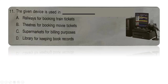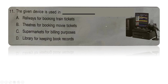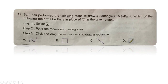Next question: the given device is used in — A: a railway for booking train tickets, B: theatres for booking movie tickets, C: supermarkets for billing purposes, or D: a library for keeping records. This is a billing machine, used in supermarkets for billing purposes where items are selected and a bill is generated. The right answer is option C.